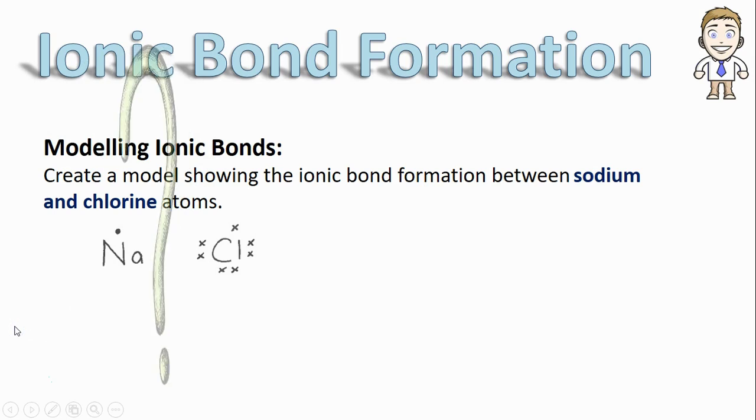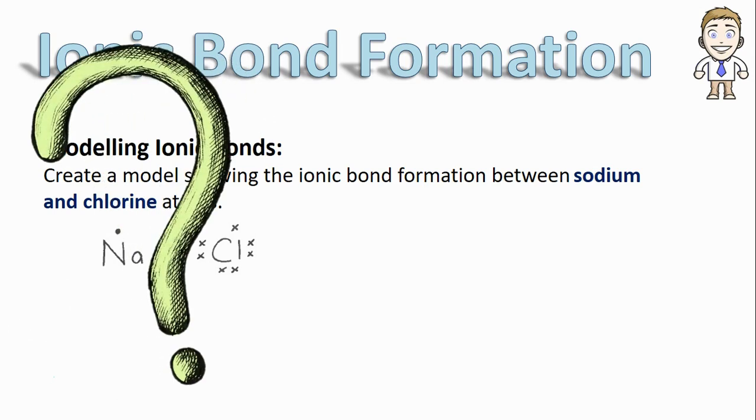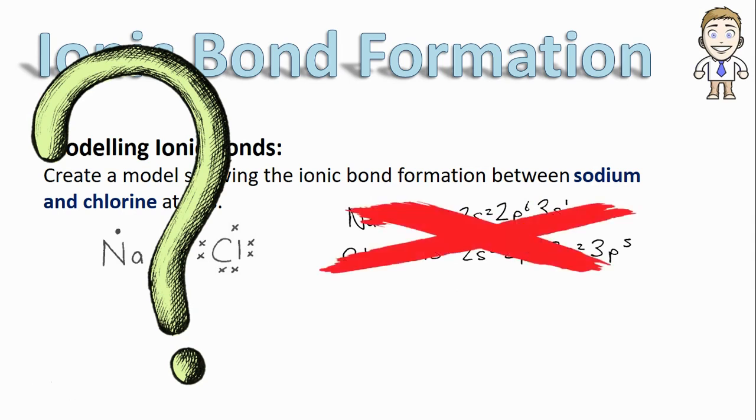It's also really important that you know how to figure out how many valence electrons each atom has. I filled in one and seven but you have to do this for yourself when creating your own models. There's two methods, one of them we covered in the last video and it involves writing out the entire electron configuration for each atom. You can do this and it always will work but it can be pretty time-consuming.